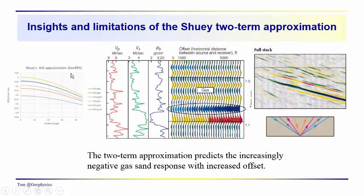The Shuey two-term approximation is fairly easy to calculate, and it depicts the old class two and class three AVO anomalies very nicely. So it does a good job of providing insights into what we might expect to see in these different oil and gas scenarios here.